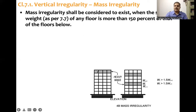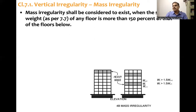As shown here, this is a heavier mass at a particular floor. When we compute the mass and check if the mass of any floor is more than 150% of the mass of the floor below, then mass irregularity is considered to be present.